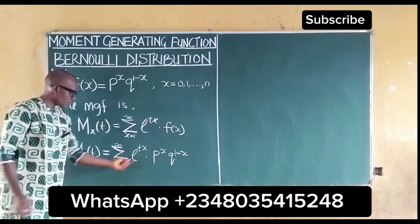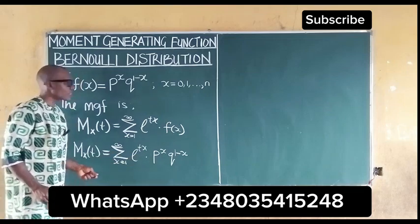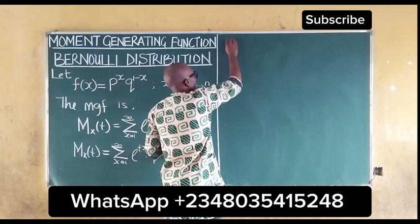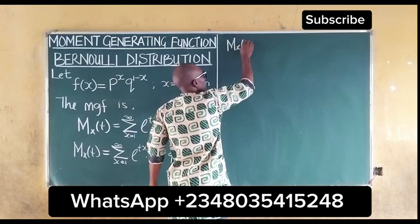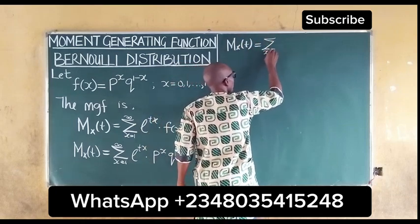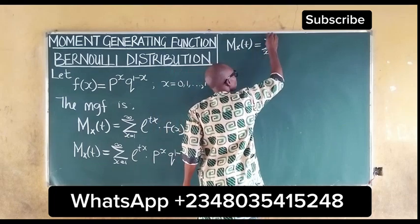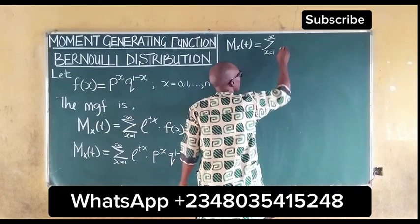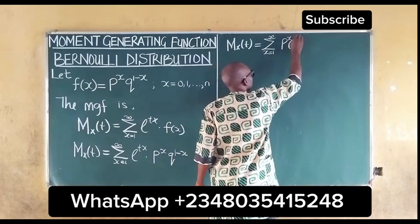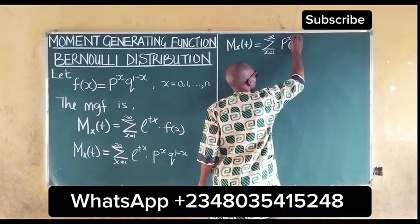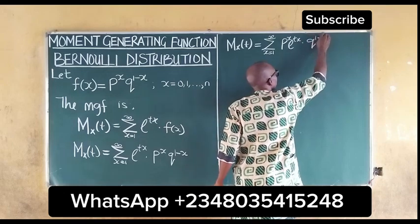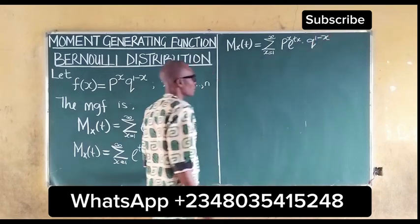Since the exponent x appears in both e^(tx) and p^x, we can combine them. Our moment generating function becomes the summation of x ranging from 1 to infinity of (pe^t)^x multiplied by q^(1 minus x).